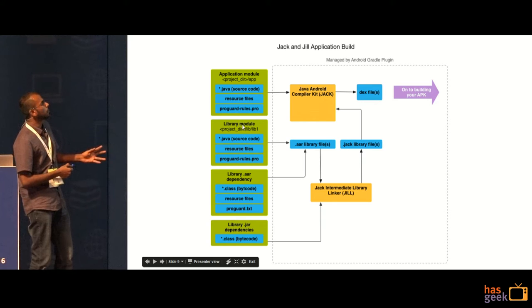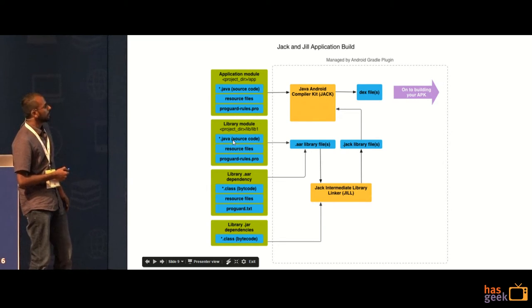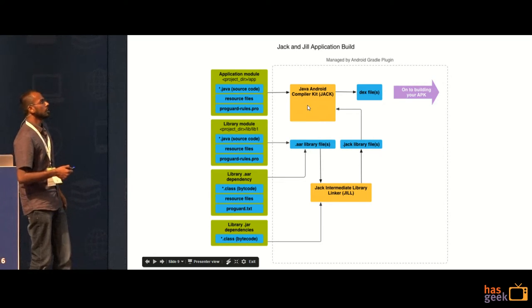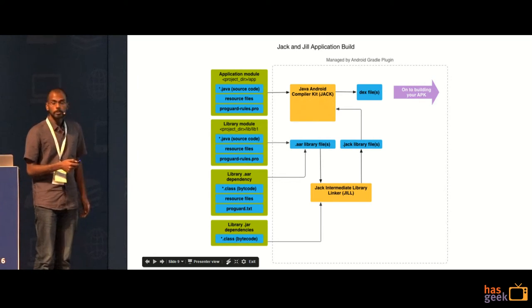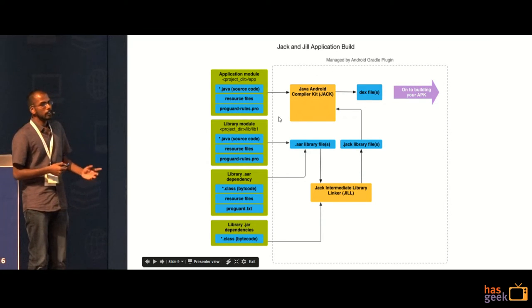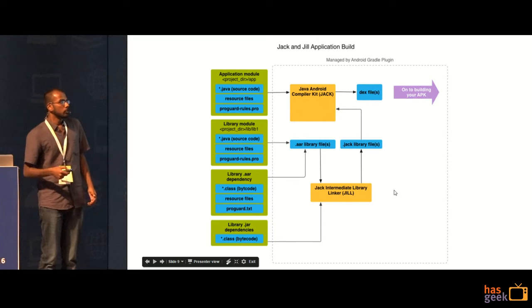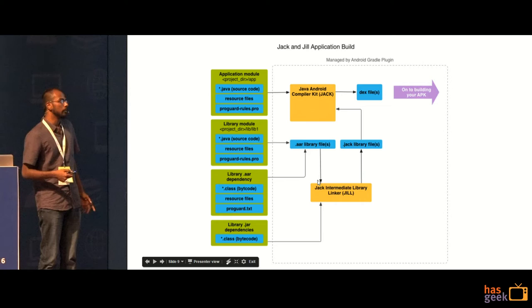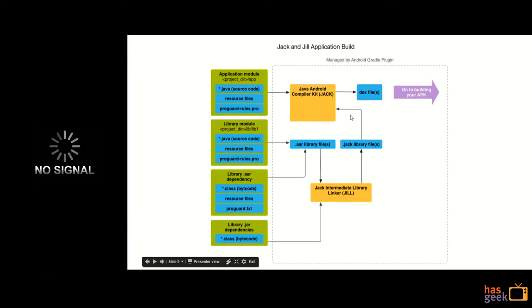You have the application module, which is your Java source code, and you have your third party libraries. All of them are converted through Jill into this dot Jack library file and passed on to Jack. So if you are using Kotlin or any other JVM language like Scala, it would also pass through Jill. So there is a cost involved in using a third party library because it is not directly passed on to the compiler. There is an intermediate step involved.